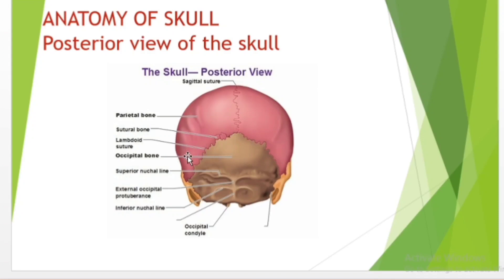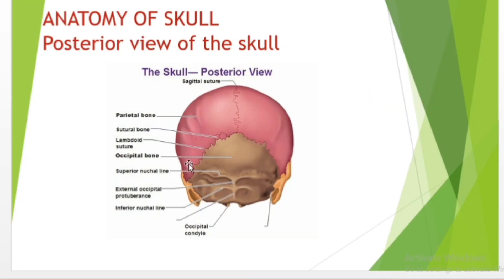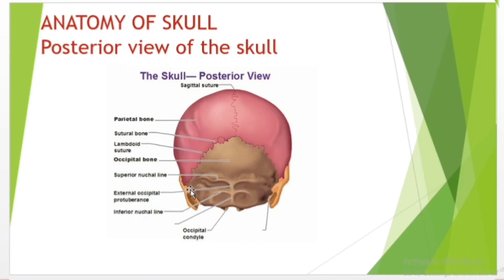The posterior and lateral view of the skull shows us important bones that maintain the integrity of the skull. The posterior surface protects the region of the brain containing the occipital lobe and cerebellum. The lateral bones include the temporal and zygomatic bones, which encase the brain and provide attachment to the muscles of the face. The zygomatic process is a bony feature which allows for the attachment of the masseter muscle, an essential muscle of mastication. We will also discuss the sutures of the skull, which unite individual bones in adult life.